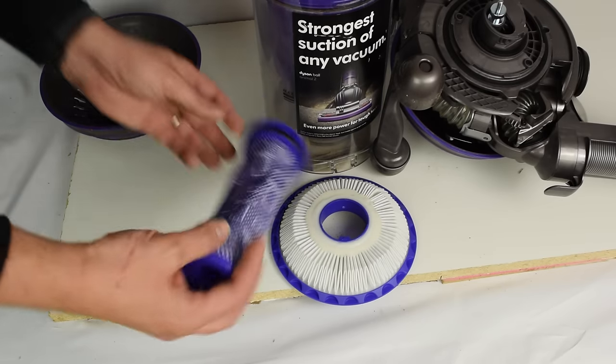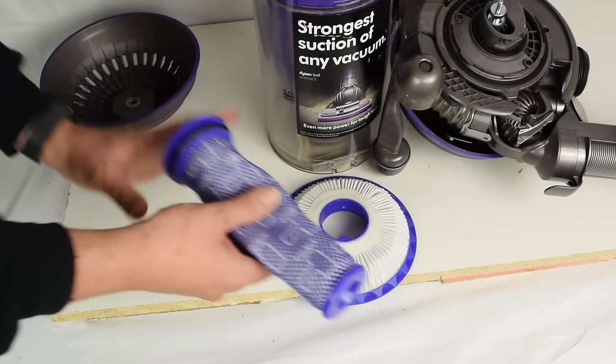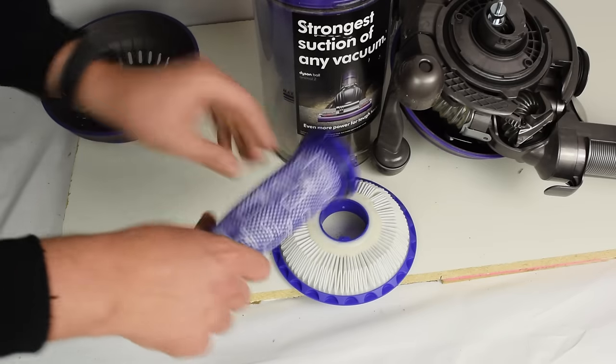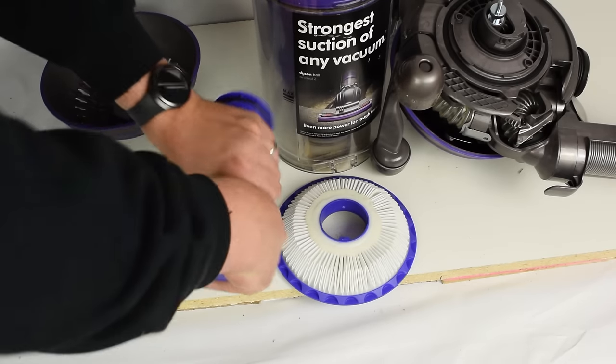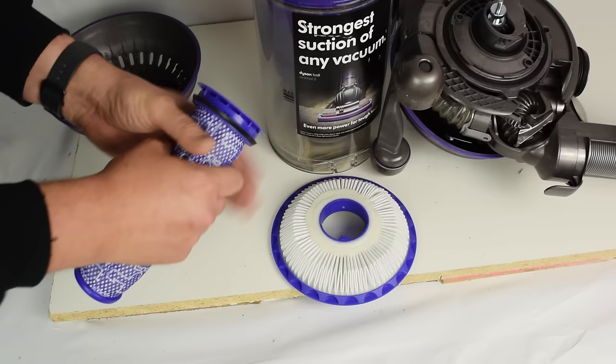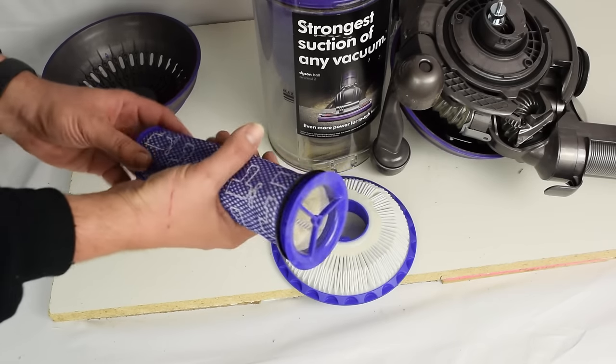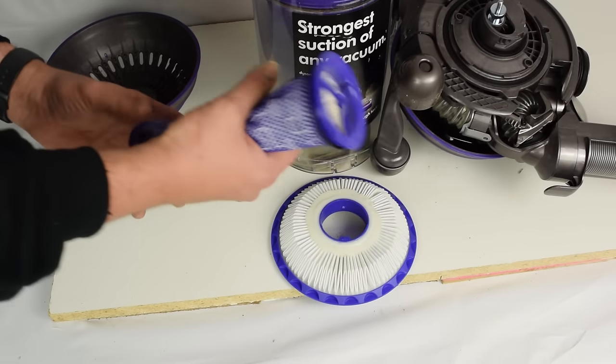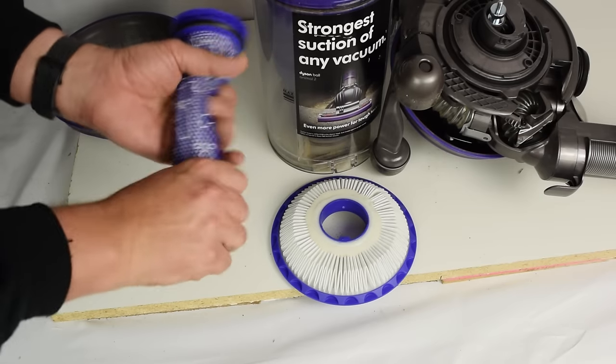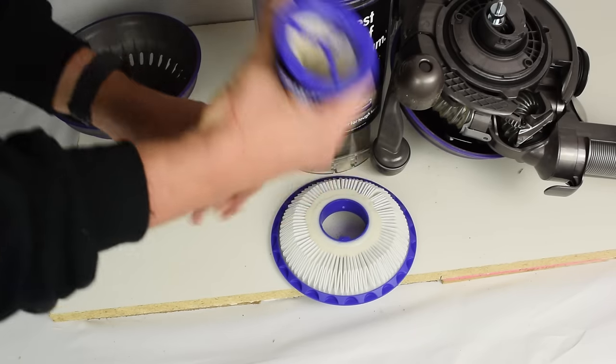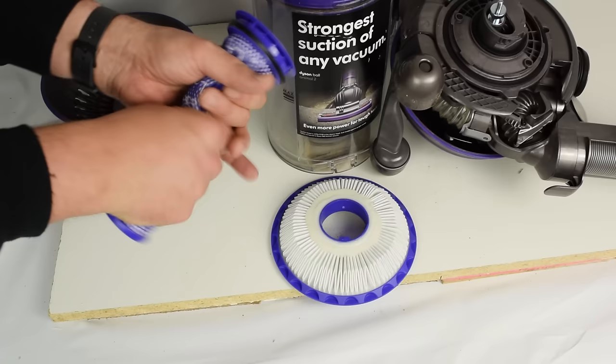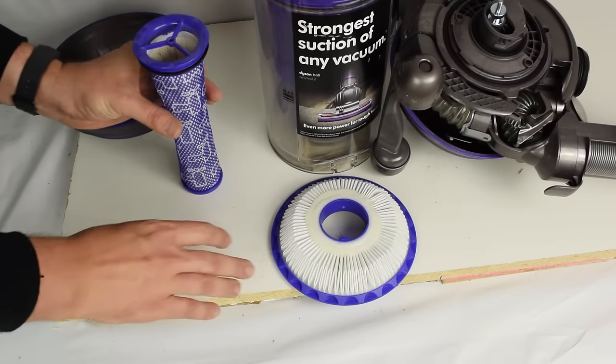So when you're washing these, Dyson recommends only cold water. Now with this filter you can get it really soaked in there and you can be kind of rough with it. You can squeeze it and do whatever you can under that cold water. Basically what you're trying to do is get that brown water that's going to come out of there to run clear. And once it is running clear and you've soaked it and wring it out, wring it out one more time, get all the water out, let it sit for 24 hours.